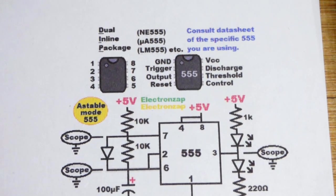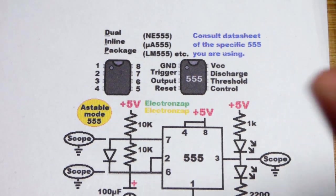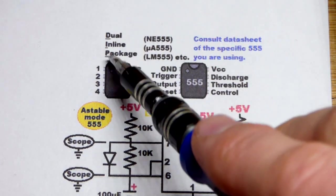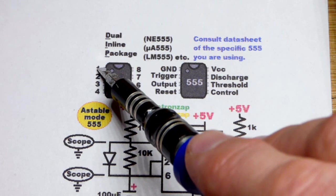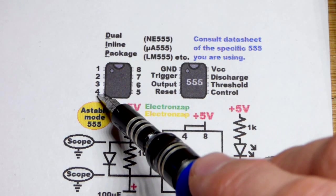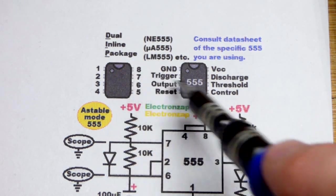Here is the pin layout for the dual inline package 555 that we were using. You've got the little indent at the top, and you start at the left going counterclockwise. So 1, 2, 3, 4, then you jump across 5, 6, 7, 8. That's the name of the pins right there.